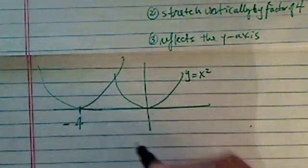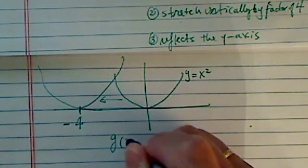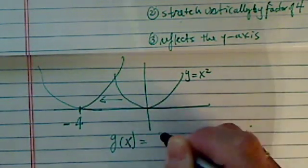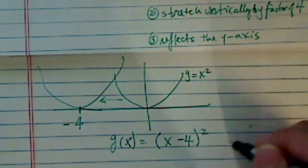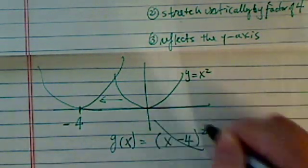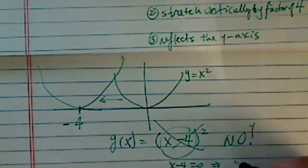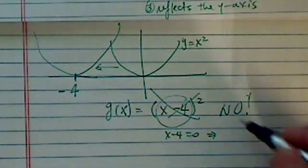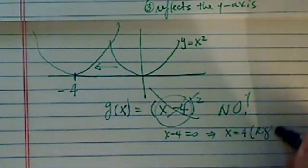Now a lot of students say, well, shift it four units to the left, you would think it makes sense it should be x - 4 squared, but that's not the case. The reason is that when we set x - 4 equal to 0, you can see the new minimum point happens at x = 4, which is to the right.